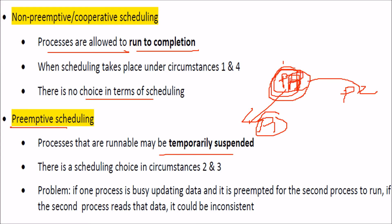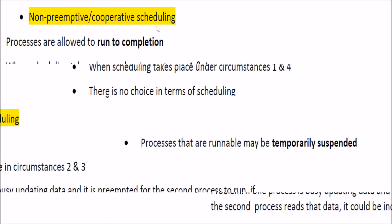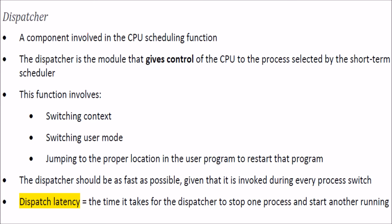A problem with preemptive scheduling is data inconsistency. For example, if P1 is updating its data and is preempted, then P2 is placed on the CPU and tries to read P1's data — since P1 was not properly updated, P2 will see inconsistent data. This is a critical concern when using preemptive scheduling.